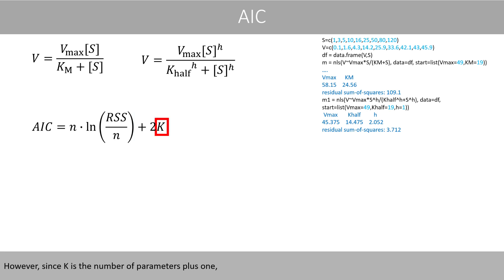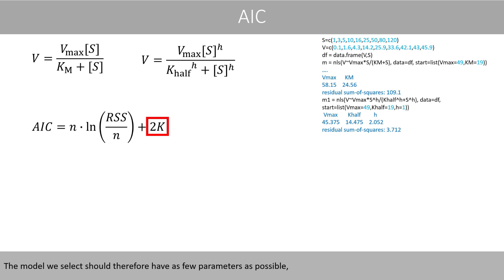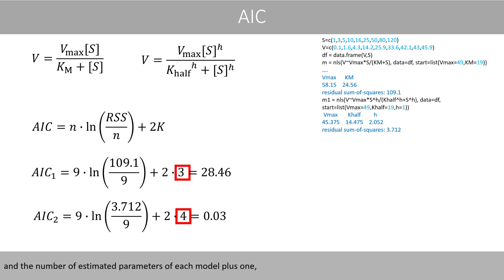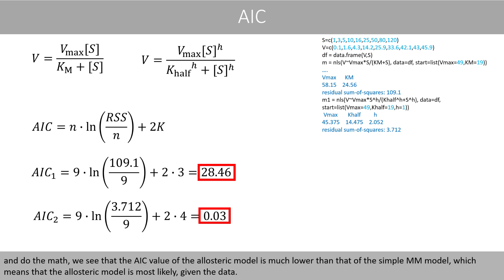However, since k is the number of parameters plus one, a model with more parameters will get a penalty, because more parameters will result in a higher AIC value. The model that we select should therefore have as few parameters as possible, but still fit well with the data, resulting in a low sum of squared residuals. If we plug in the sum of the squared residuals, the sample size, and the number of estimated parameters of each model plus one, and do the math, we see that the AIC value of the allosteric model is much lower than that of the simple Michaelis-Menten model, which means that the allosteric model is most likely given the data.